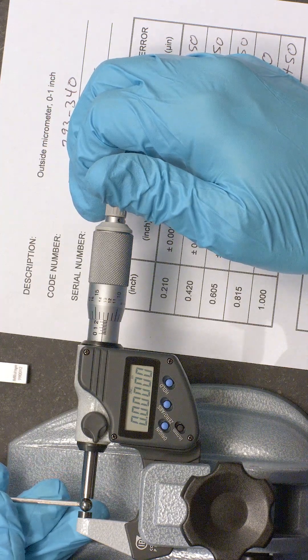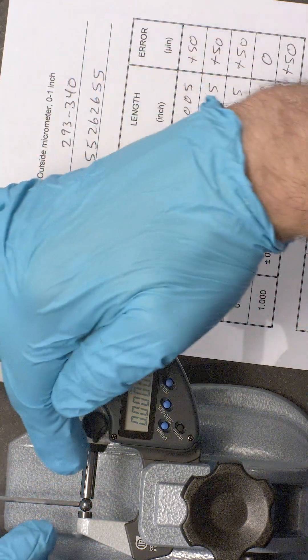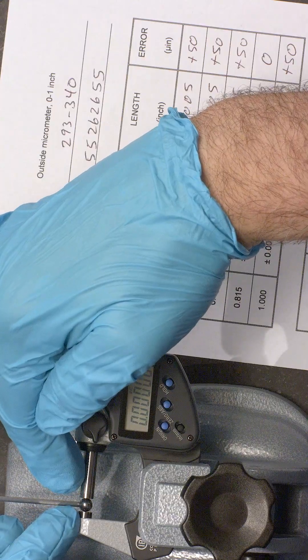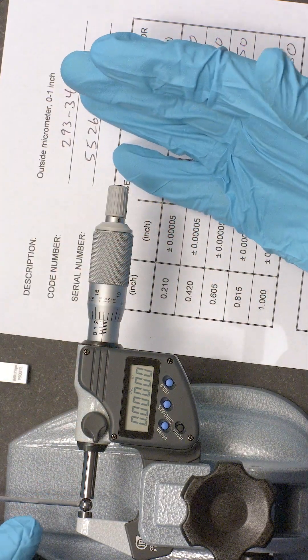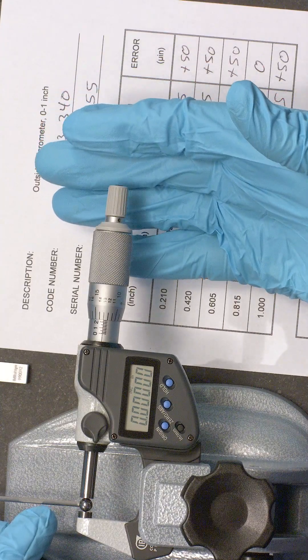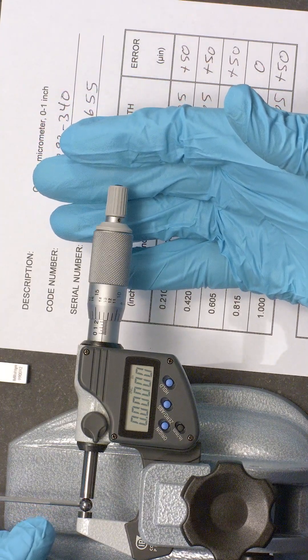Any variation in the size is due to the flatness or parallelism of those two measuring faces. Then we'll report the range of those results. The maximum minus the minimum is reported as what we'll call the parallelism.